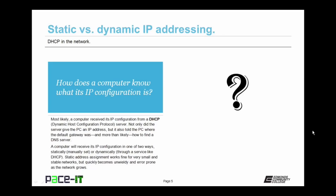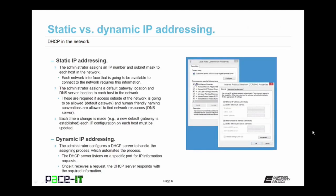Static IP address assignment works fine for very small and stable networks, but quickly becomes unwieldy and error-prone as the network grows and more nodes come onto the network. The administrator assigns an IP number and subnet mask to each host in the network — whether a PC, router, or other piece of electronic equipment. Each network interface that is going to connect to the network requires this information. The administrator also assigns a default gateway location and DNS server location to each host in the network. These settings are required if access to outside networks is going to be allowed, and if human-friendly naming conventions are going to be used to find network resources.